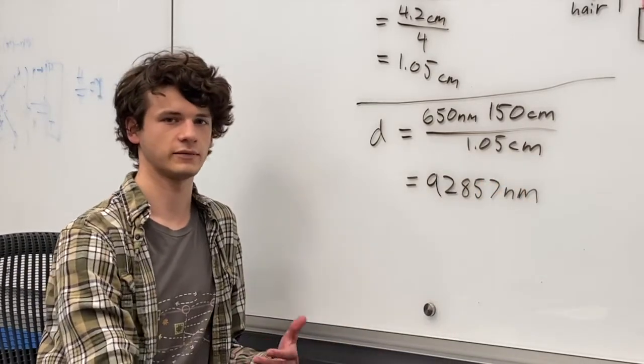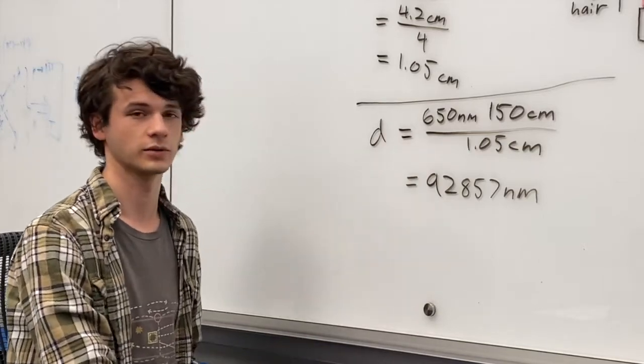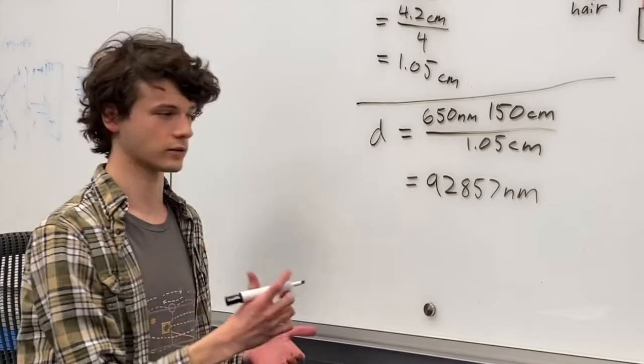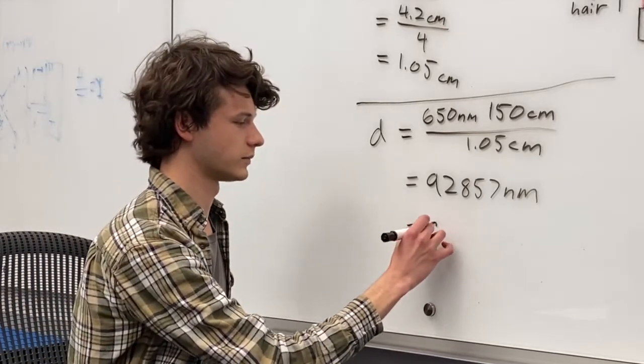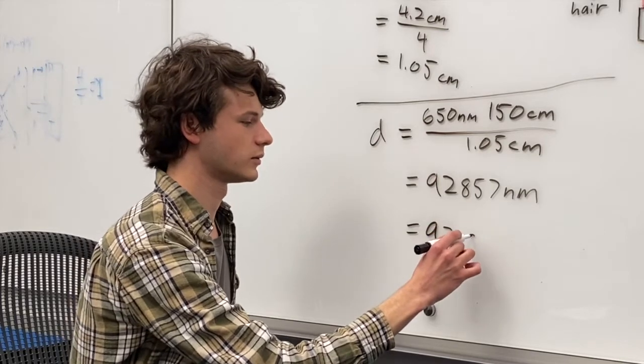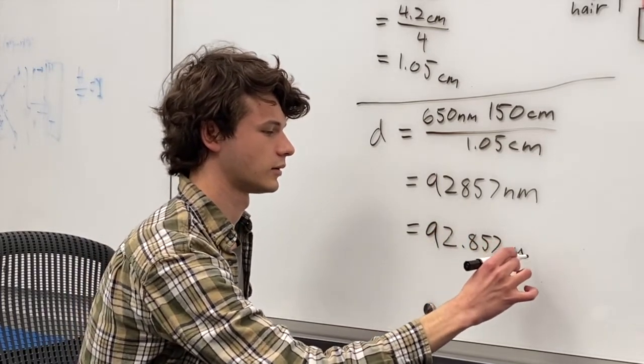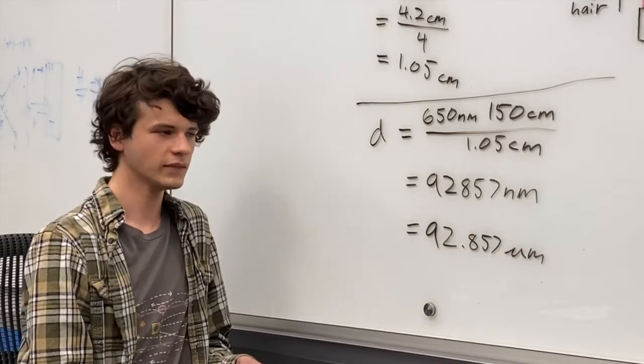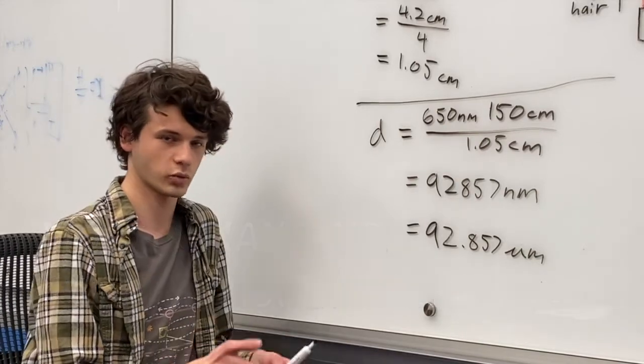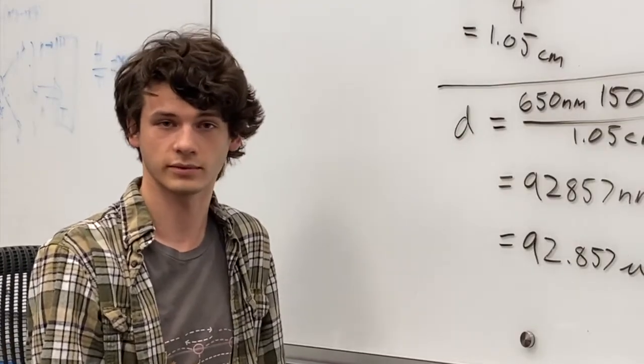But this isn't a very convenient unit to use to measure the diameter of a hair. And so we can divide by 1,000 to convert it to micrometers. So this is going to be 992.857 micrometers. And most human hairs are going to be between about 20 micrometers and 200 micrometers. So what was your diameter?